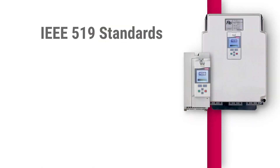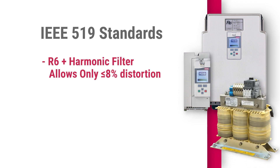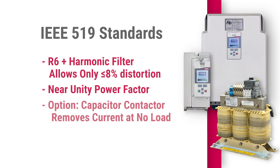Now we'll talk about how our harmonic filters meet the IEEE 519 standard. Pairing the regen and harmonic filter together can achieve less than or equal to 8% harmonic distortion. We can also provide near unity power factor, which means most power transfer is usefully consumed by the load. An option we can include is the capacitor contactor, which removes the capacitors while at an idle state, eliminating the capacitive current at no load.